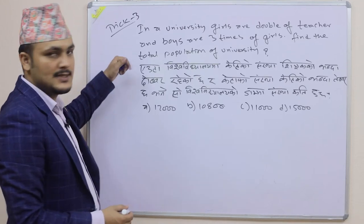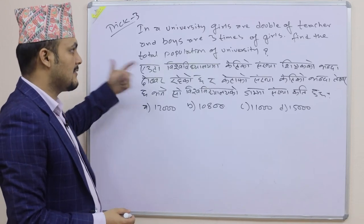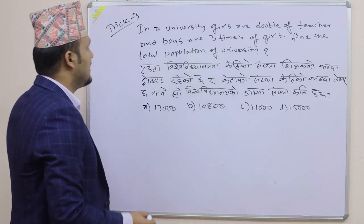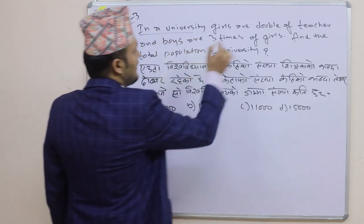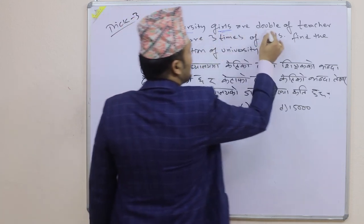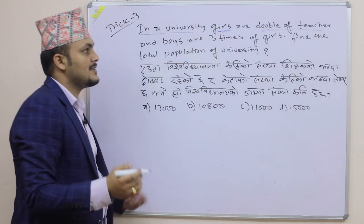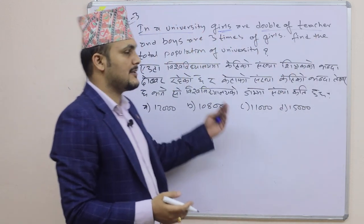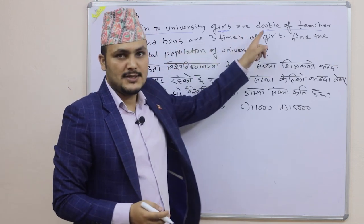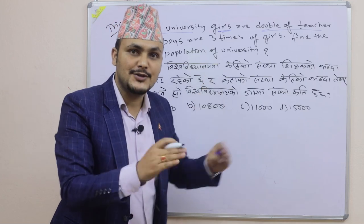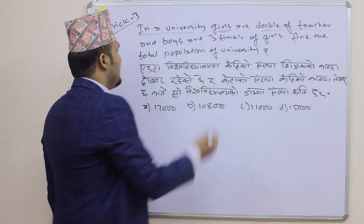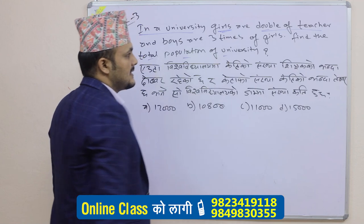Love your trick. This is a tricky question — I have different trick questions. In this university, girls are double the number of teachers, and boys are three times the number of girls. Find the total population of the university.